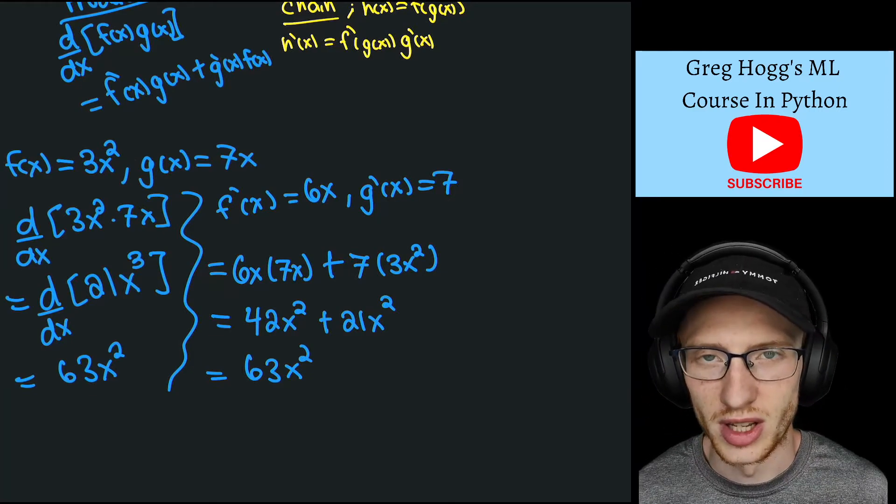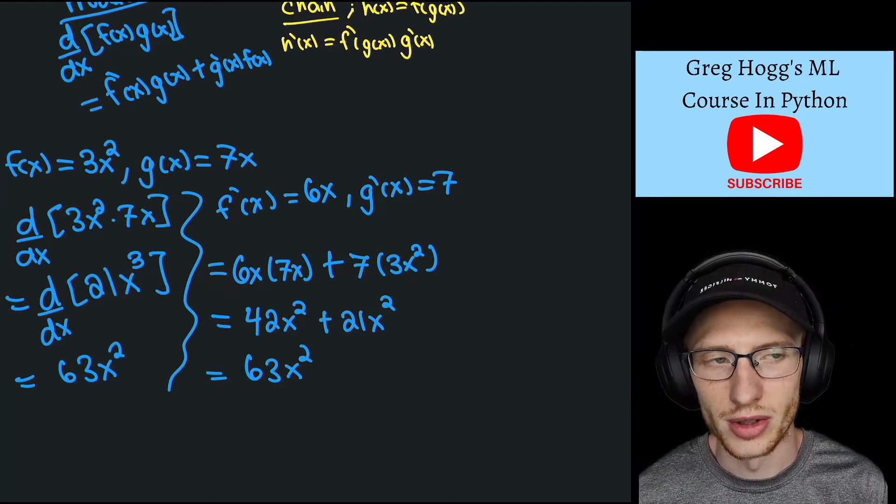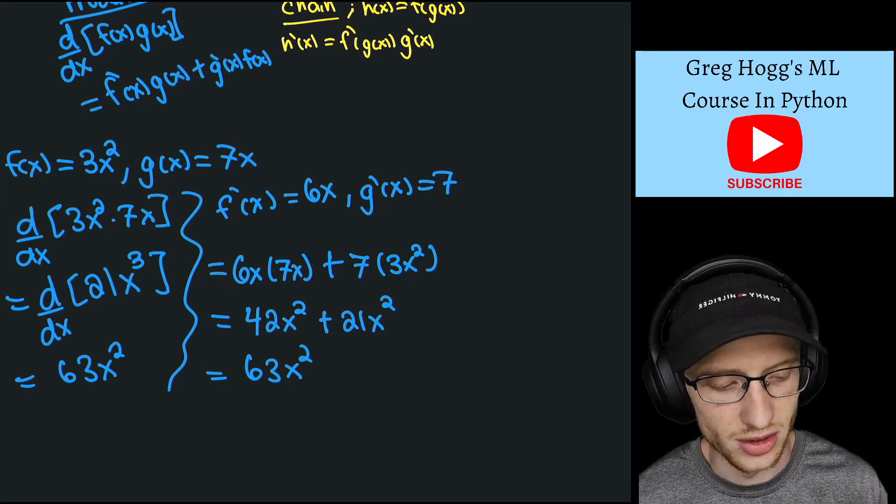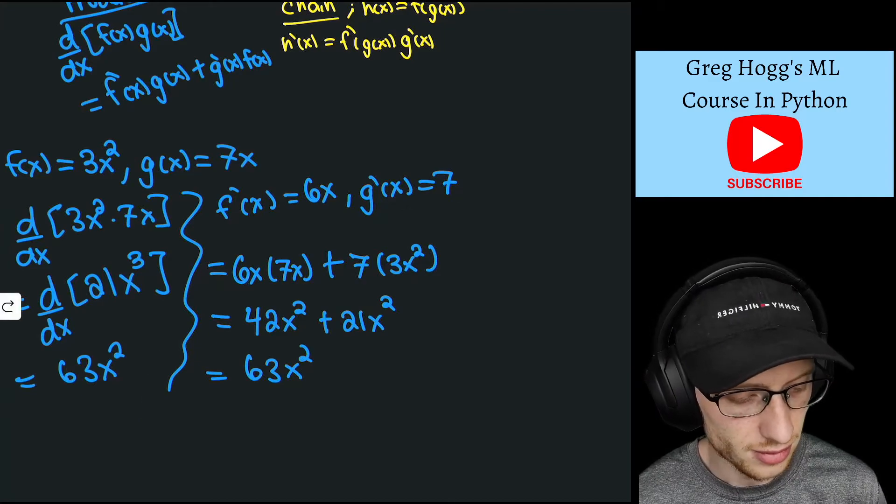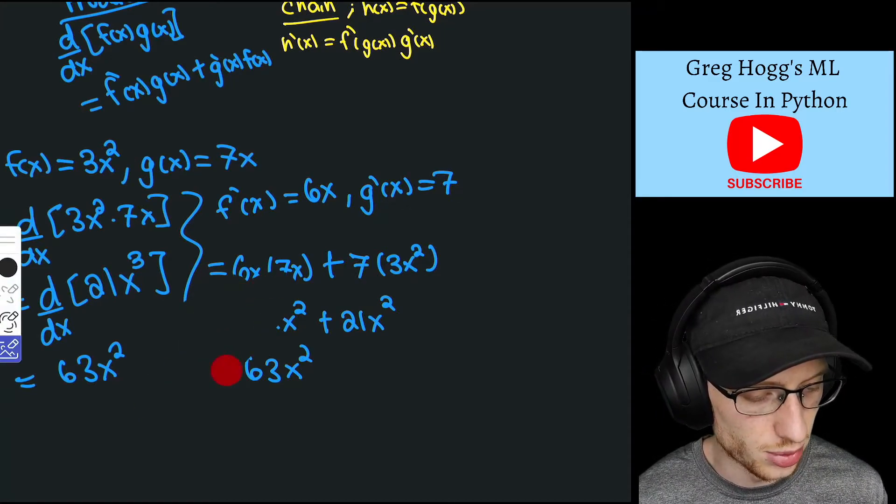And so that proves that, yeah, this is how you do the product rule for that, there are some other examples, when you can't do it like this, you would actually really need to use the product rule. So that's one such example for the product rule.